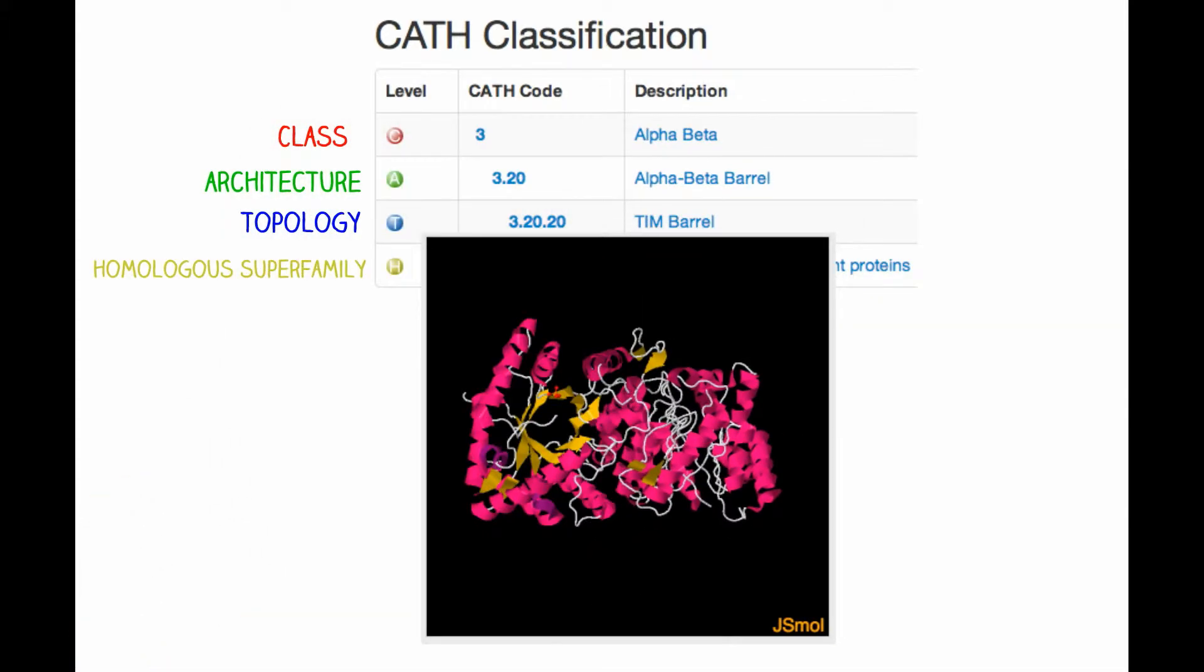Furthermore, it has a TIM barrel topology, which consists of a conserved region of eight alpha helices and eight parallel beta strands that alternate.